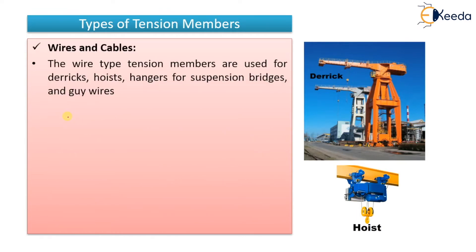The first type of tension member is wires and cables. Any cables or wires which are applied to a load will be subjected to tensile forces. Wire-type tension members are used for derricks — I have put a diagram or photo here so you can understand what a derrick is. You can see the cables here which are capable of lifting certain loads and are subjected to tension.